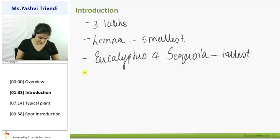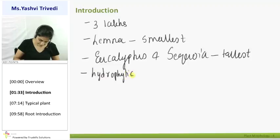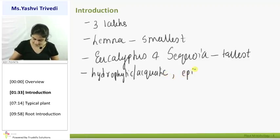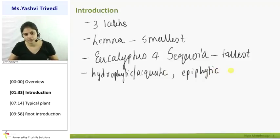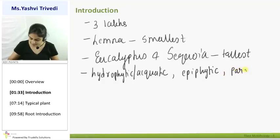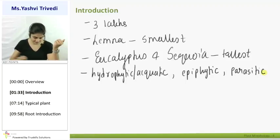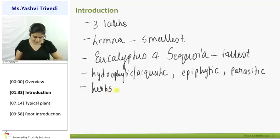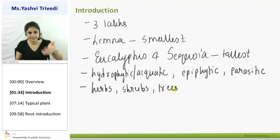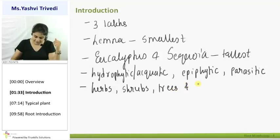Variations are also found in plant habitats. Some plants are hydrophytic or aquatic, living in water areas. Some plants are epiphytic — partially depending on the host for habitat. Some are parasitic, totally depending on the host for food, water, and minerals. Plants also vary by type: some are herbs (medicinal plants), some are shrubs (very small plants), some are trees (very tall plants like Eucalyptus and Sequoia), and some are climbers which require support of a host because they lack a strong stem.